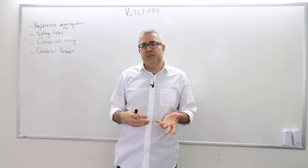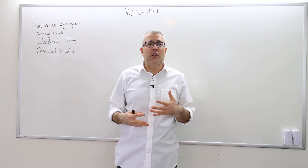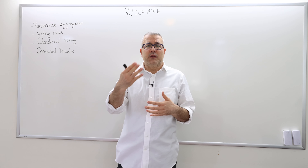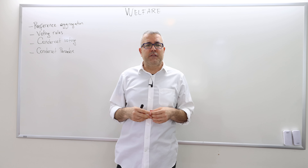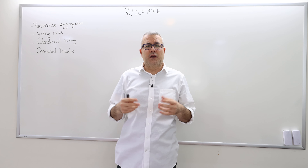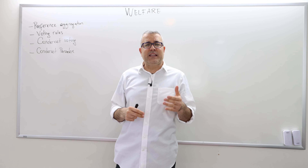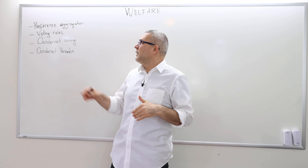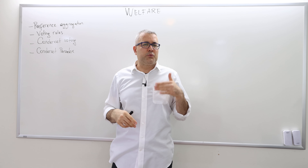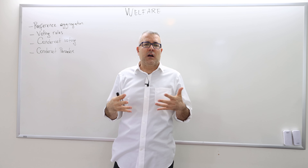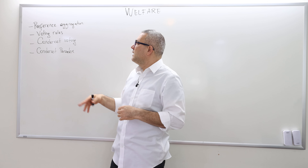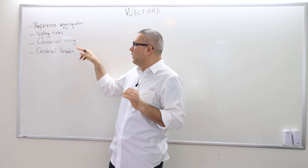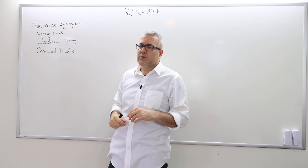However, when agents in the society have disagreement about which alternative is the best, then the answer is not straightforward. So different aggregation rules or procedures are suggested. In this video I'm going to talk about voting rules, in particular the Condorcet voting rule.